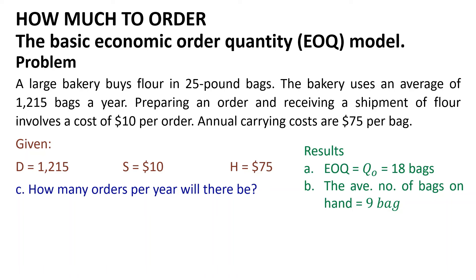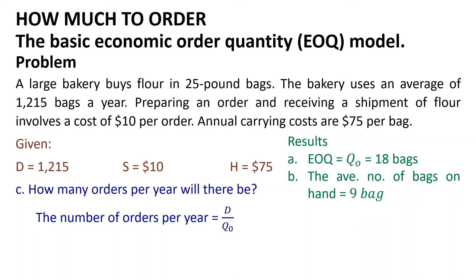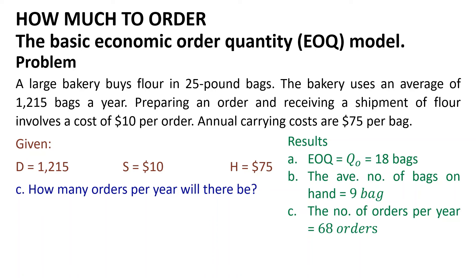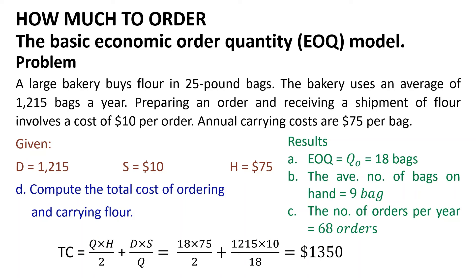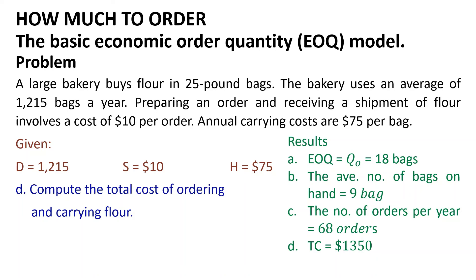The third question is how many orders per year there will be. The number of orders per year equals annual demand divided by the EOQ: 1,215 / 18 = 67.5, approximately 68 orders per year. The next question is to compute the total cost of ordering and carrying flour: TC = (Q × H / 2) + (D × S / Q) = (18 × 75 / 2) + (1,215 × 10 / 18) = $1,350. So the total cost of ordering and carrying flour is $1,350.